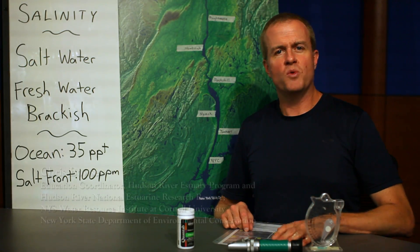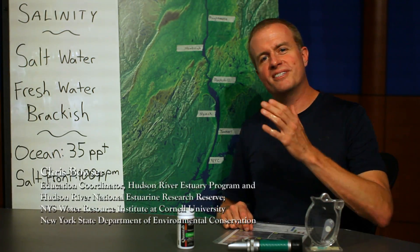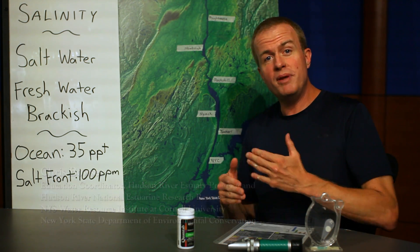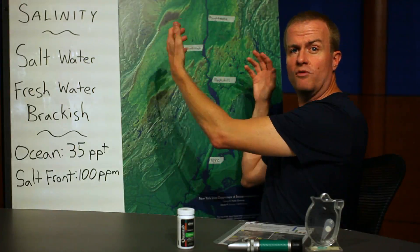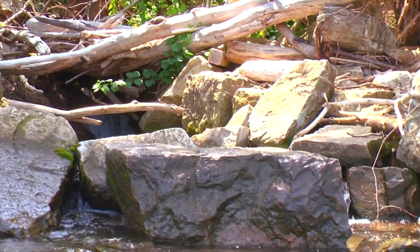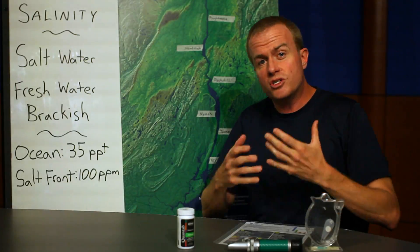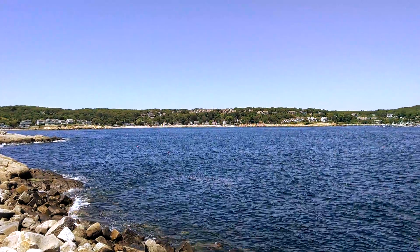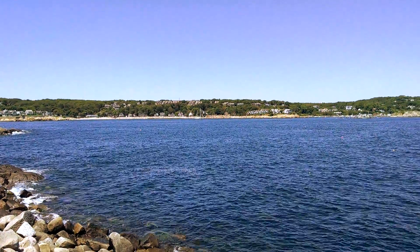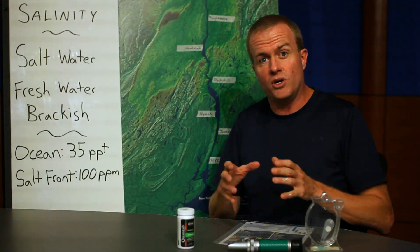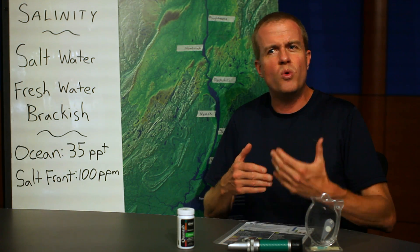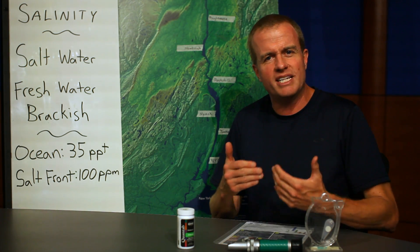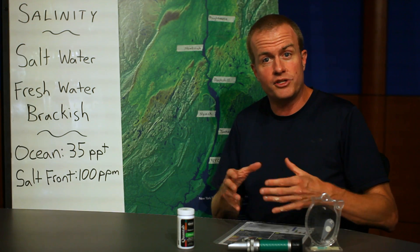Hello, I'm Chris Bowser. We're going to be talking about salinity on the Hudson River. The lower Hudson is an estuary, meaning there are freshwater inputs from rain and snow in the watershed, but there's also a strong saltwater input from the tides of the Atlantic Ocean. Salinity, or the amount of salt dissolved in the water, directly affects and determines what species of plants and animals live in a given section of the river.